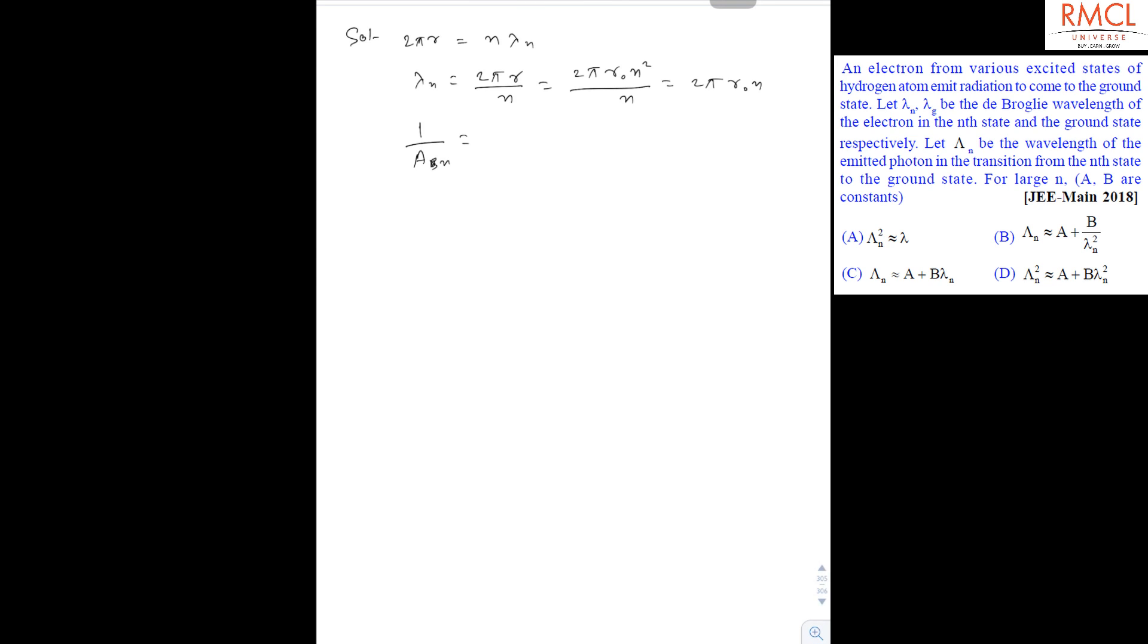And now 1 upon lambda, 1 upon An is equal to r 1 upon 1 square minus 1 upon n square from Balmer equation. So An will be equal to 1 upon r times 1 plus 1 upon n square minus 1.